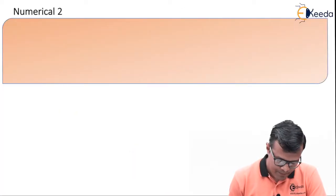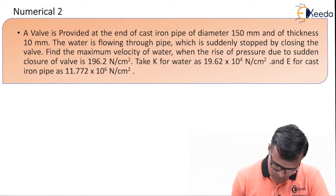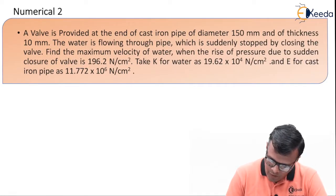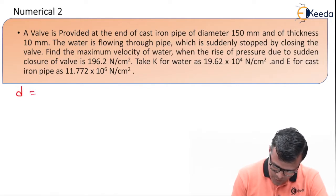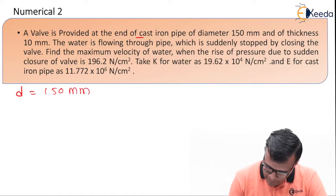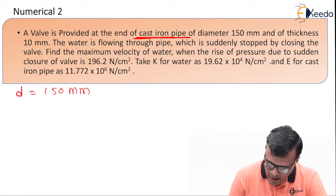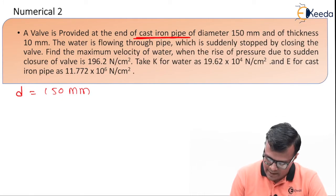Let us see the numerical. A valve is provided at the end of cast iron pipe of diameter 150 mm, so the value of diameter is 150 mm. They are providing the data as cast iron pipe, so the pipe is of metal, so it may be elastic case.